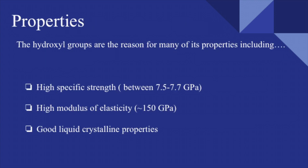In order to discuss how cellulose nanocrystals can be used, the properties they possess must be explained. Because cellulose nanocrystals are in the hydroxyl group, they have a high specific strength between 7.5 and 7.7 gigapascals, they have a high modulus of elasticity of approximately 150 gigapascals, and they possess good liquid crystalline properties.